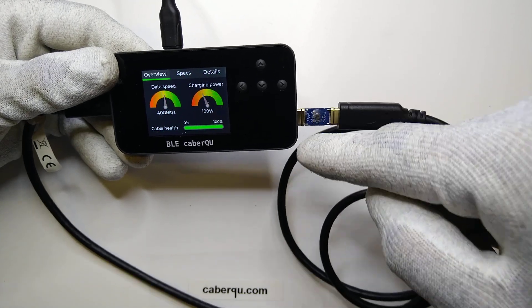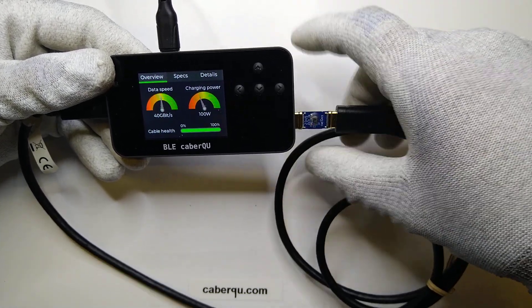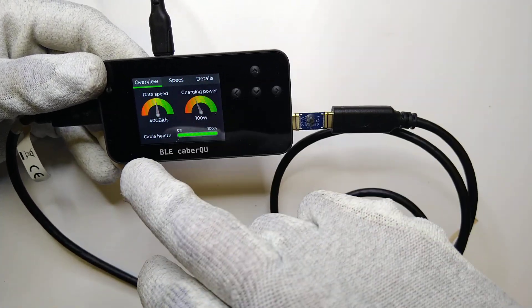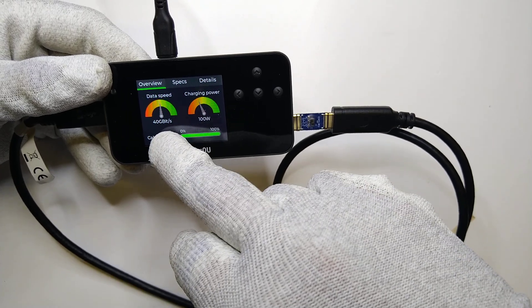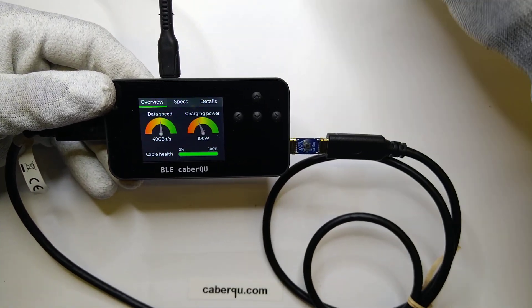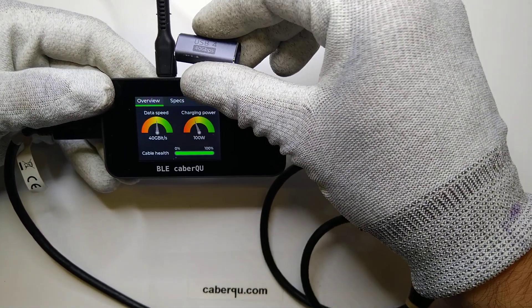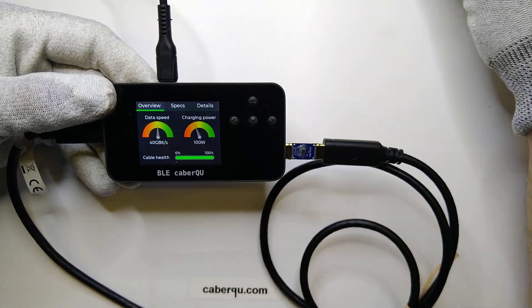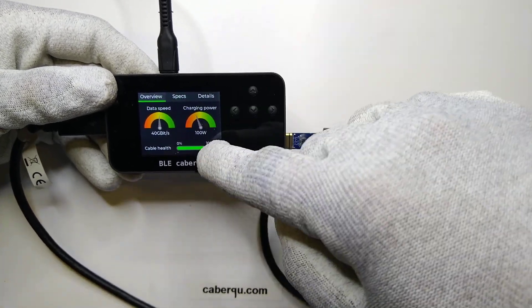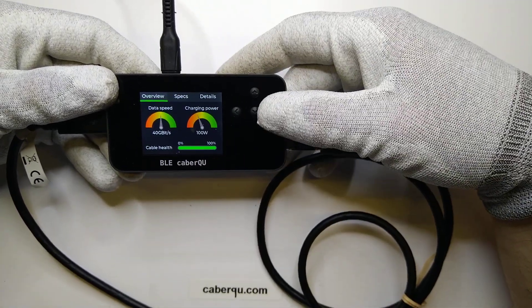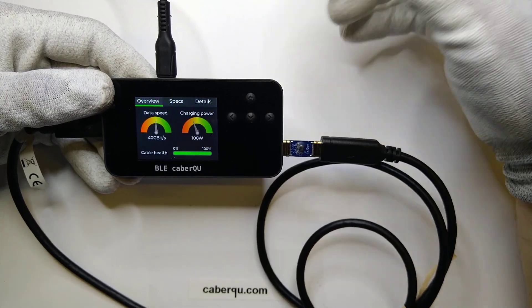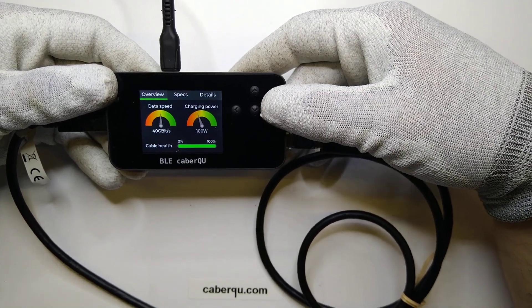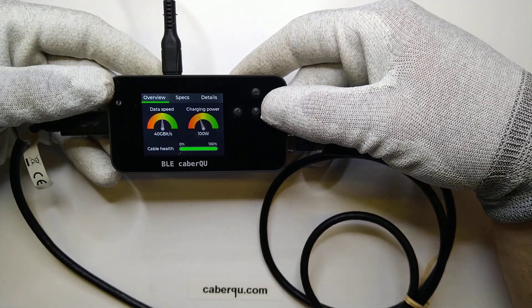the chip inside or on top of this printed circuit board actually advertised itself as a 40 gigabits per second cable, which is identical to the stuff that they wrote on that. So, that's actually not too bad. And it, funnily enough, advertised itself as a 100-watt capable charging cable. The cable health is at 100%, so that's good enough.